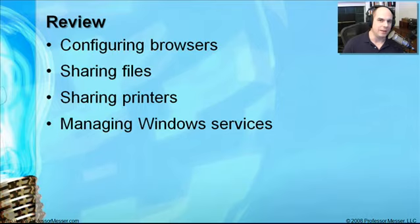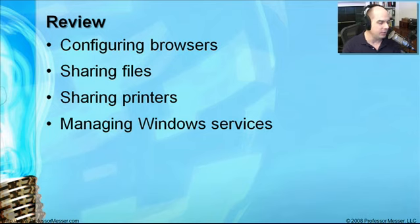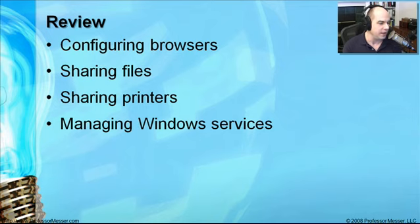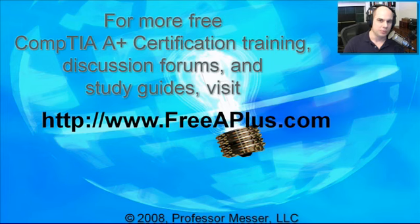In review, we've gone through a lot about how to use the network. We've configured the proxy settings inside of our Internet Explorer browser. We've shared files over the network and configured our access control and permissions. I've gone through printer sharing — just how easy it is to get a new driver loaded on your computer to share a printer over the network. And finally, we've looked at managing some of the services that are running behind the scenes on our Windows workstation. For more free A-Plus videos, to participate in our message boards, and much more, you can visit our website, freeaplus.com.